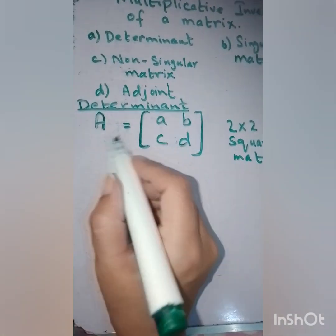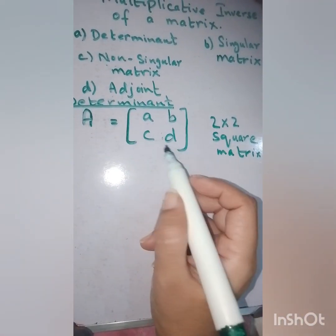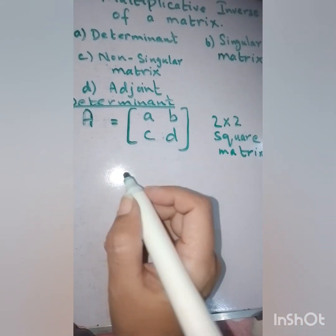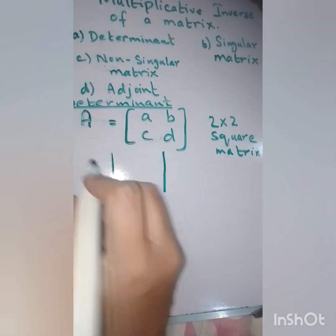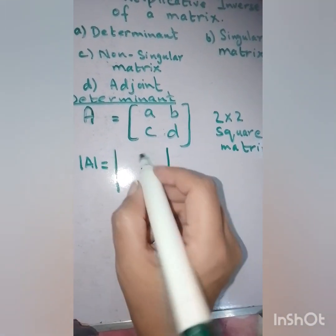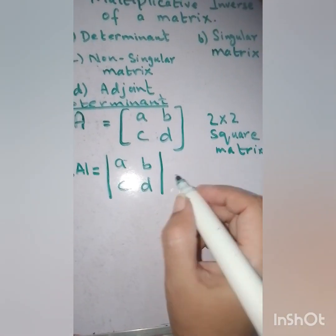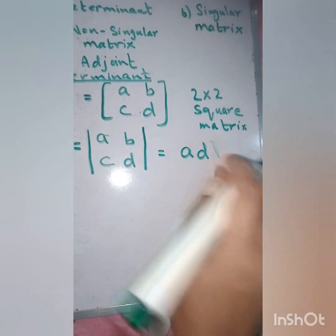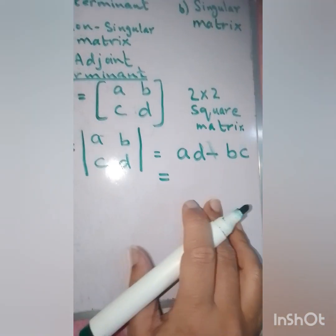If A is a 2 by 2 square matrix with entries A, B, C, and D, the formula to find out the determinant is written using vertical bars, and we write A, B, C, and D inside — the final result being A times D minus B times C.